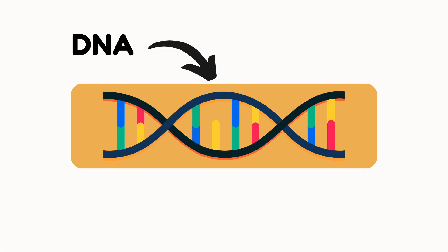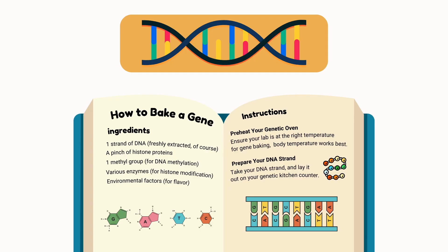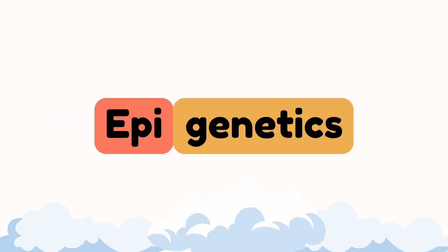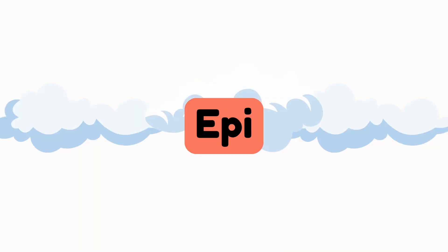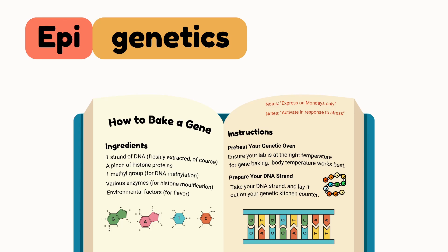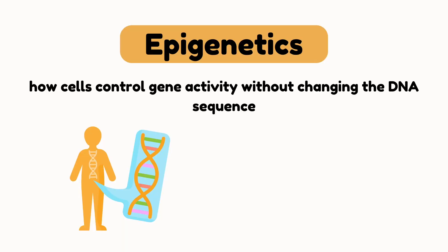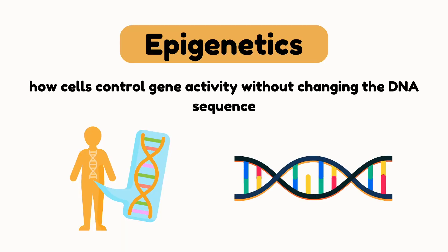The answer lies in how the genome is regulated, which is controlled by epigenetics. Picture your DNA as a cookbook, with recipes that determine who you are and how your body functions. Each recipe in this cookbook is a gene, with its own set of instructions, or protein sequence, that tells your body what to do. This is where epigenetics comes in — 'epi' means above. So think of epigenetics as the notes written in the margins of your cookbook. These notes don't change the recipes themselves, but they can change how the recipes are read and interpreted. In other words, epigenetics is how cells control gene activity without changing the DNA sequence.